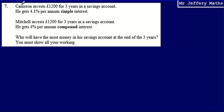This is question seven. Here we're told that Cameron invests £1,200 for three years in a savings account. He gets 4.1% per annum simple interest.